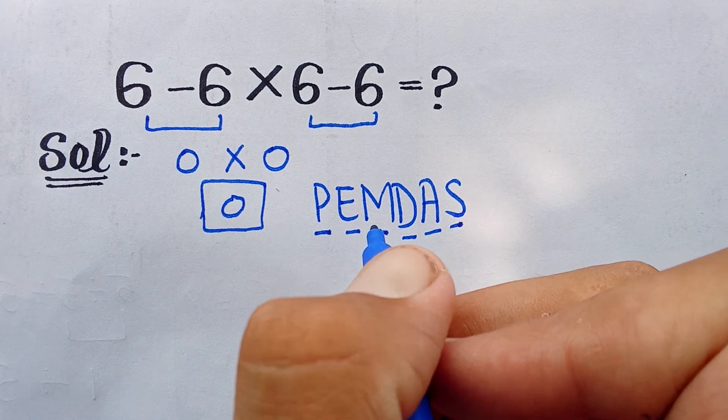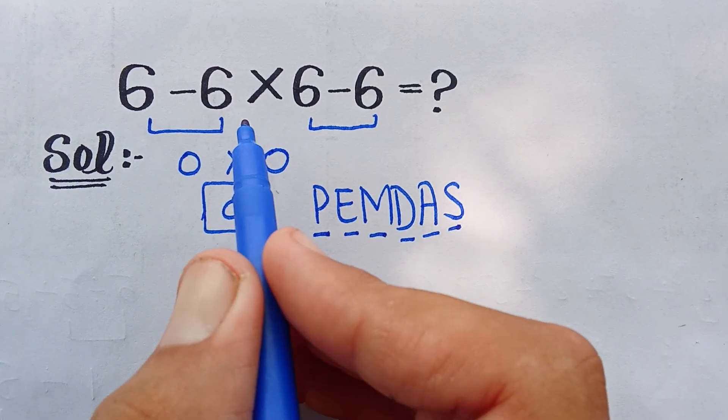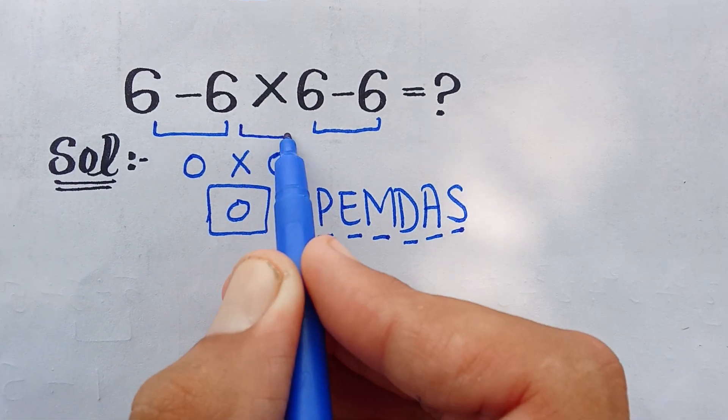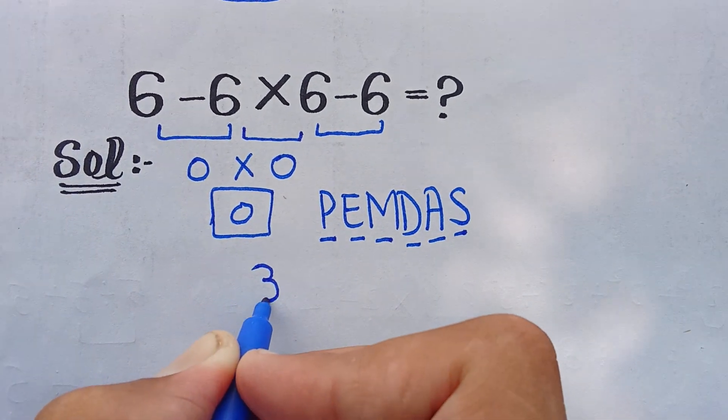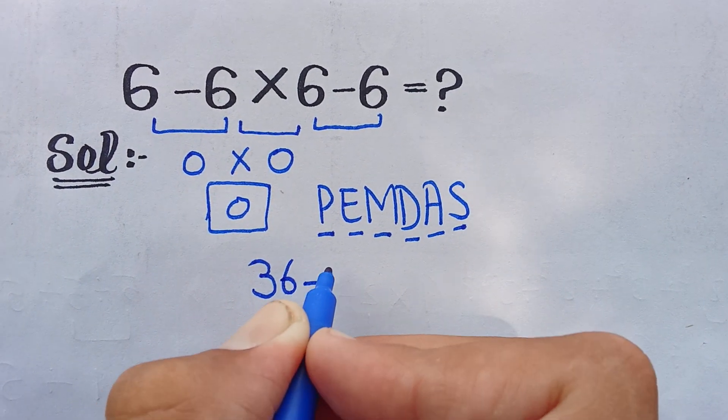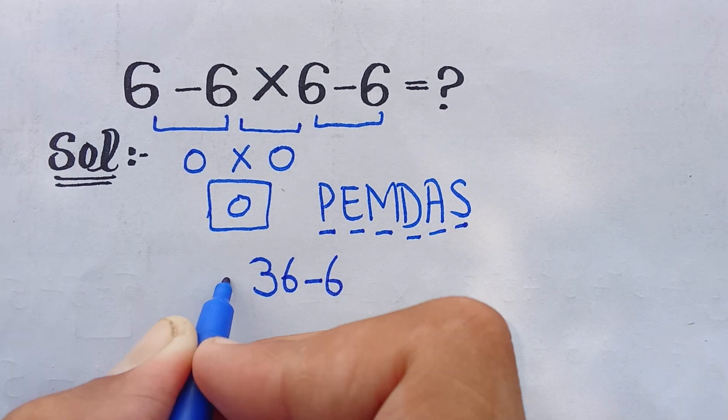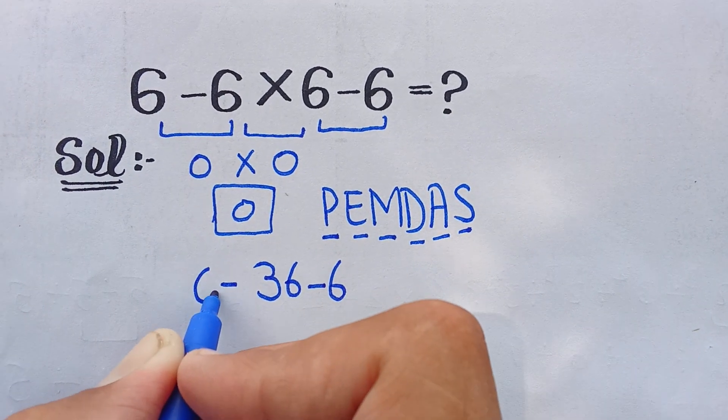So first of all we can solve multiplication. 6 minus 6 multiplied by 6 is equal to 36, and minus 6 and in this side minus 6.